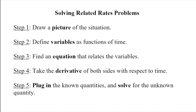Here is a strategy for solving related rates problems that we'll use for basically all of these problems. Step one: draw a picture or diagram of the situation. Step two: define variables as functions of time — anything changing over time gets defined as a variable. Step three: find an equation that relates those variables, such as the Pythagorean theorem or the formula for the area of a circle. Step four: take a derivative of both sides of that equation with respect to time, ddt. Step five: plug in the known quantities and solve for the unknown.